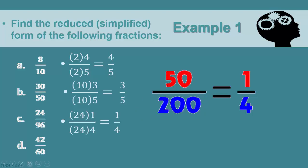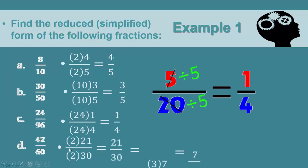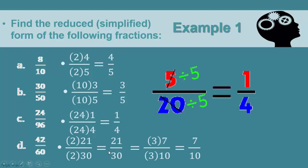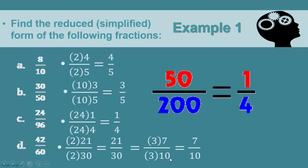In example D, two divides into both forty-two and sixty to get twenty-one over thirty. We factor out and cancel the two, but we are not done, since three can divide into twenty-one and thirty. We factor out three from twenty-one to get three times seven, and from thirty to get three times ten. We cancel the threes and get seven over ten. We are done, since nothing other than one can divide into seven and ten.